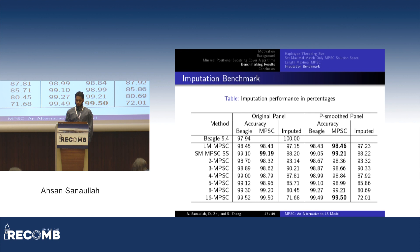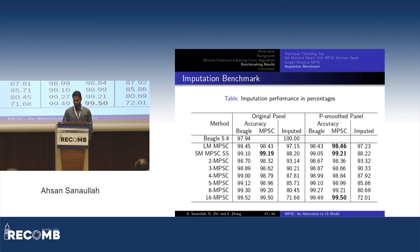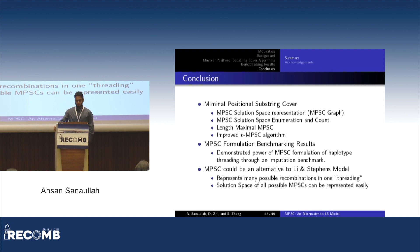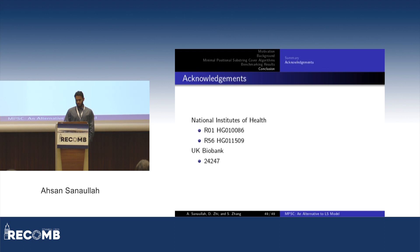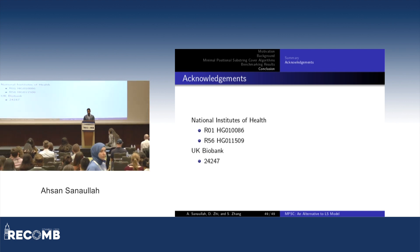The imputation results compare our methods to Beagle 5.4, which achieves 98% accuracy imputing every site. We compare length-maximal MPSC, set-maximal MPSC, solution space, and H-MPSC for varying H, showing that in some cases our solution beats Beagle's accuracy. P-Smoother does increase performance. In conclusion, we have extended the MPSC formulation and demonstrated its power through an imputation benchmark, showing MPSC could be an alternative to the Li-Stevens model. We thank the NIH for funding and the UK Biobank for data access.